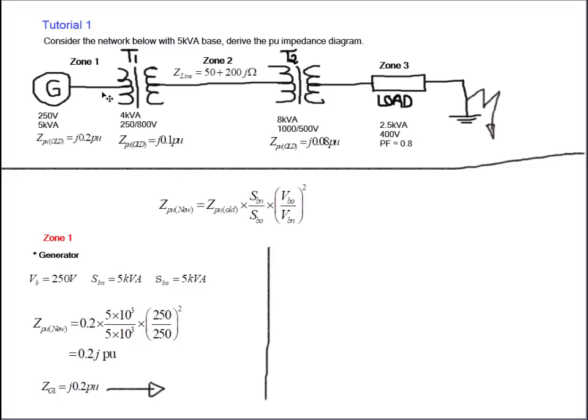Moving on into the transformer. To calculate the new per unit value of the transformer, we note that we are still working on zone one, so which means our base voltage is still 250 volt with the same kVA as given. Now the transformer T1 has an old volt ampere apparent power of 4 kVA, and it's also got a 250/800 volt voltage ratio. But as we're working from zone one, we consider the primary voltage, which is related to the generator voltage feeding in, so which is our base voltage in this case.